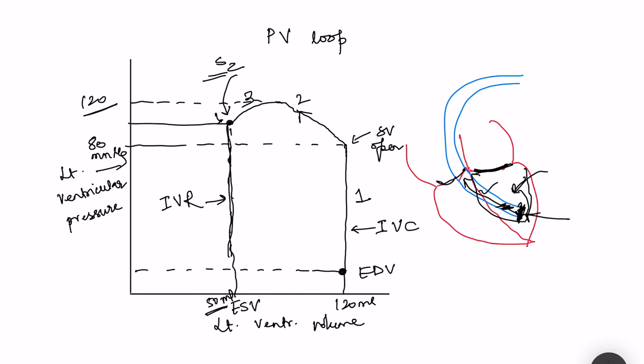At the end of isovolumetric relaxation, the AV valves open and filling of the ventricle starts, such that volume in the ventricles increases. However, the pressure still declines because the ventricles are relaxing — so despite filling, there is initially a decrease in left ventricular pressure, then a little bit of a rise in pressure with filling, but not that much. This phase is the filling phase. The pressure-volume loop depicts the relationship between ventricular volume and ventricular pressure in one beat.